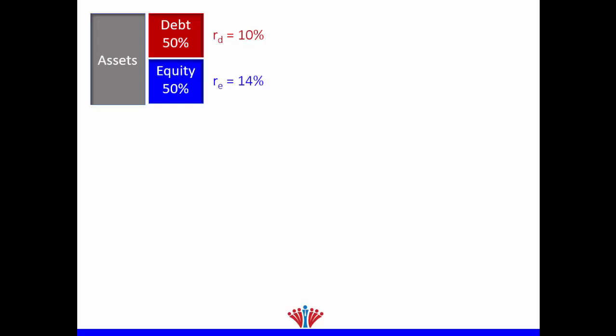We know that assets equal debt plus equity. Let's assume a firm has equal debt and equity — both 50%. The cost of debt is 10%, and the cost of equity is always higher, which in this example is 14%. To calculate the cost of the entire asset — the cost of both debt and equity, which we call cost of capital — we take the simple average: cost of debt plus cost of equity divided by two. So 10% plus 14% divided by two gives us 12%.